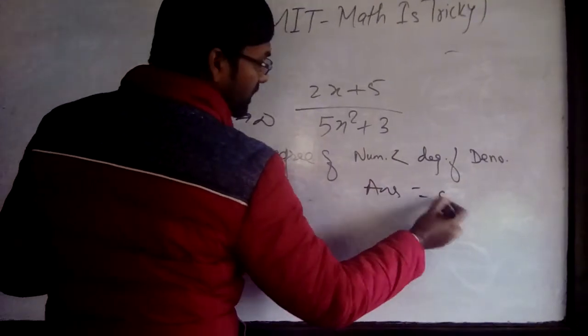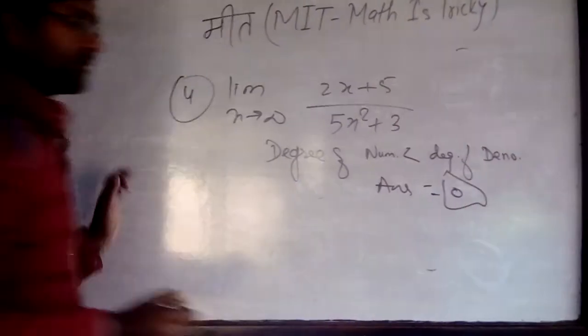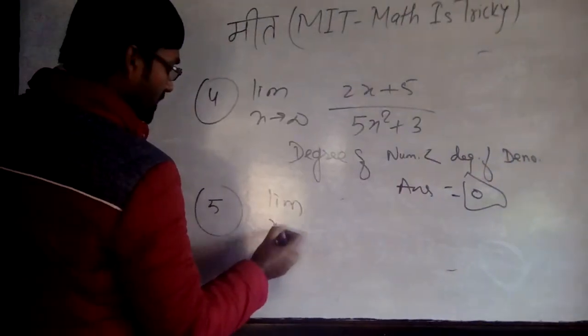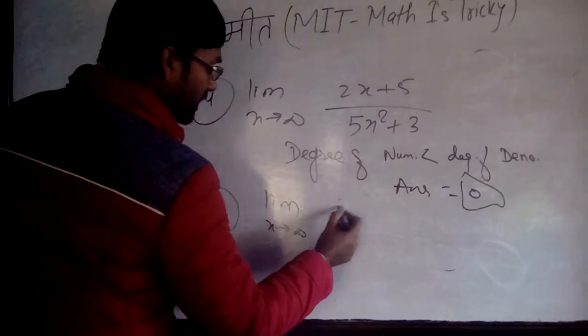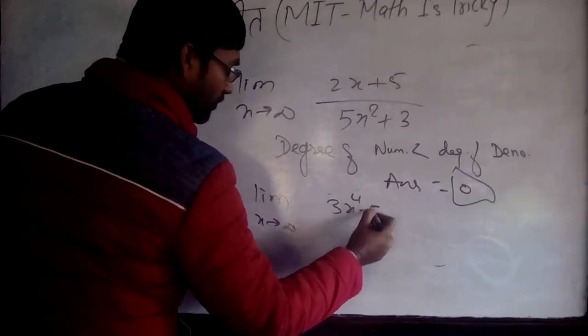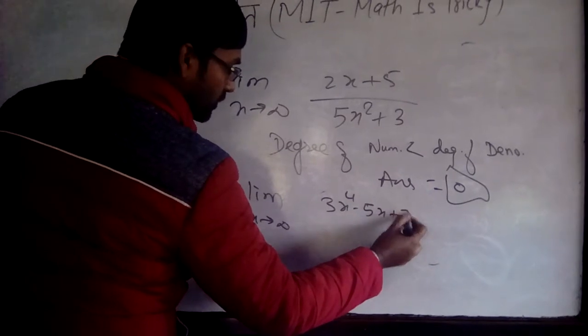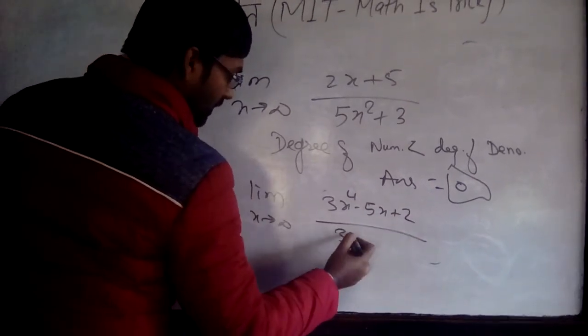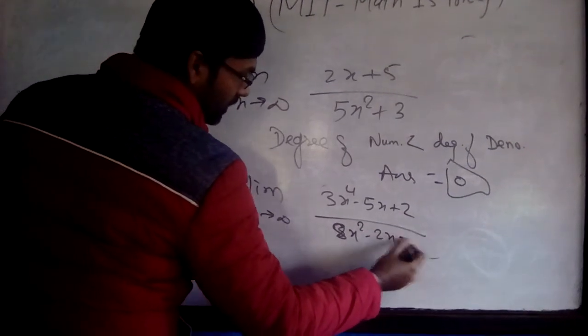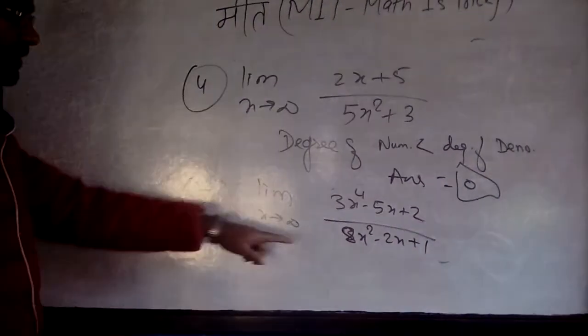Fifth number, suppose your problem is limit x tends to infinity: (3x⁴ - 5x + 2)/(8x² - 2x + 1). In this case we can see the degree of numerator is greater than degree of denominator.